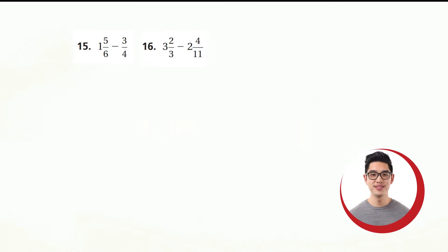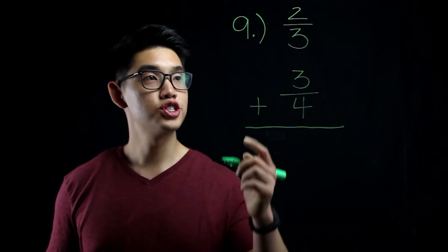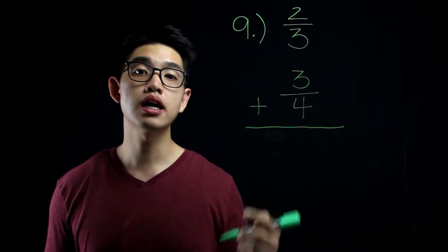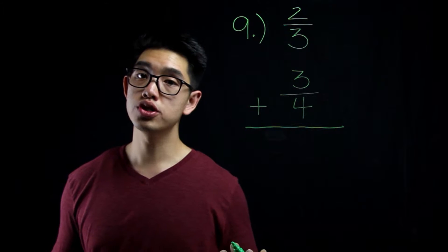All right, let's do it. Number nine is an addition problem of these two fractions. The first thing I'm going to do is find the least common denominator of 3 and 4, which is 12.